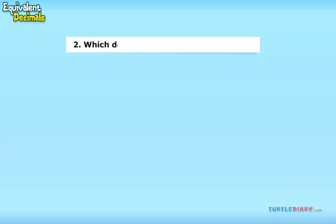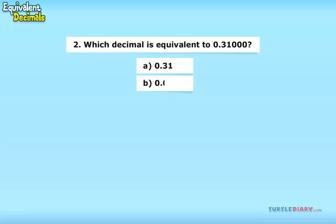Which decimal is equivalent to 0.31000? a. 0.31, b. 0.0031, c. 3.10